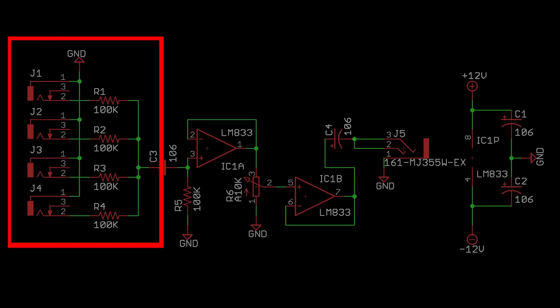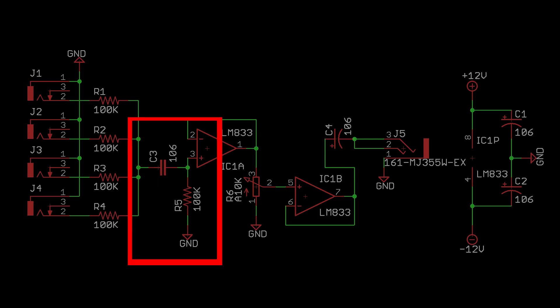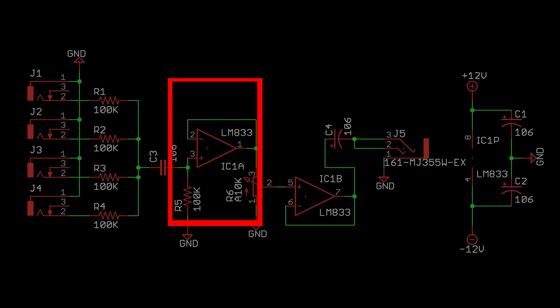Inputs come in here and are mixed together through 100k resistors. This capacitor removes DC bias, and this op amp lowers the impedance of the signal.